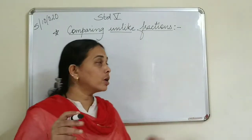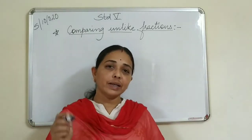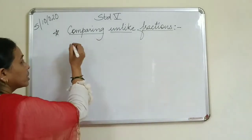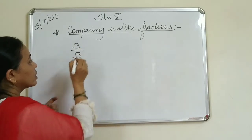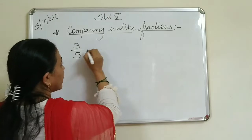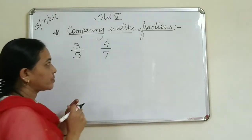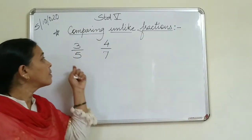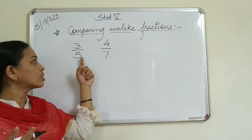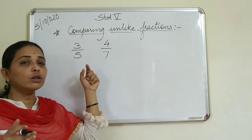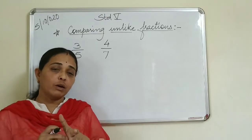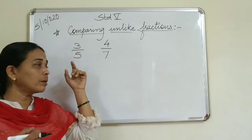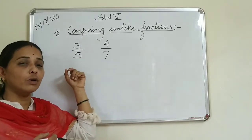Today we are going to learn comparing unlike fractions. Last time we learned comparing like fractions. Unlike fractions are those whose denominators are different. Suppose this fraction is 3 upon 5 and another is 4 upon 7. These are unlike fractions because the denominators are different. Now how to compare? If you compare numerators, 4 is bigger, but we cannot compare that way. If you compare denominators, 7 is bigger and 5 is smaller, but we cannot compare that way either.